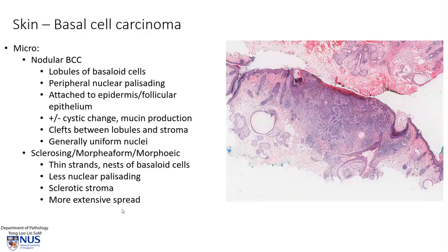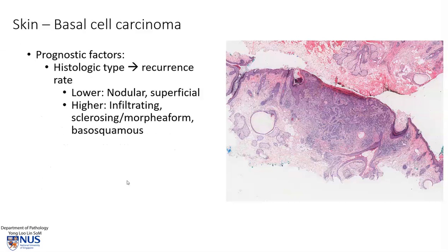These tumours tend to spread more extensively. In terms of prognostic factors, the histologic type is very important, with a lower recurrence rate for nodular and superficial type BCCs and a higher recurrence rate for infiltrating or sclerosing morpheaform BCC, as well as other types.